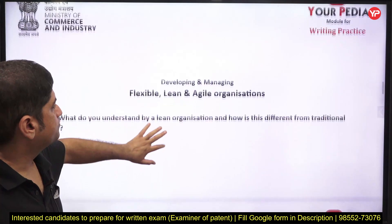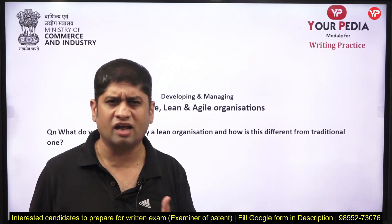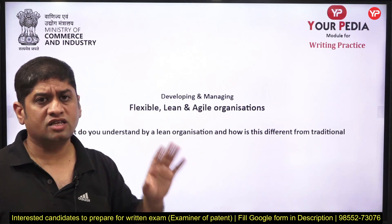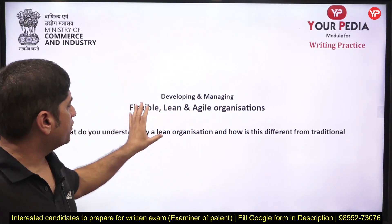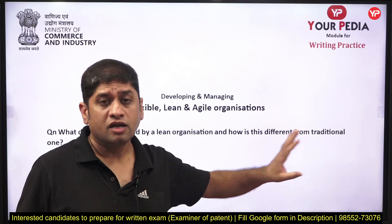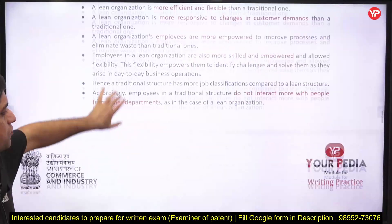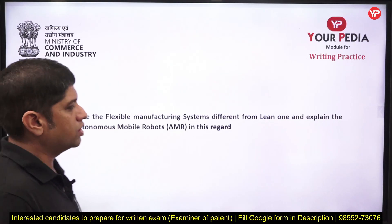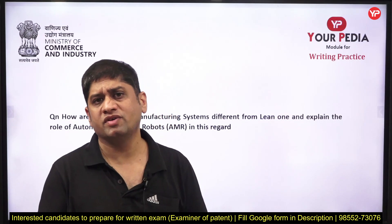This topic is from the syllabus of mechanical engineering, and I'm going to take topics from each branch of engineering. This example question is relevant for all branches — it's a generic topic. Any organization can be flexible, lean, or agile. The question from the previous video's topic is: how is the flexible manufacturing system different from the lean one, and explain the role of Autonomous Mobile Robot (AMR) in this regard.